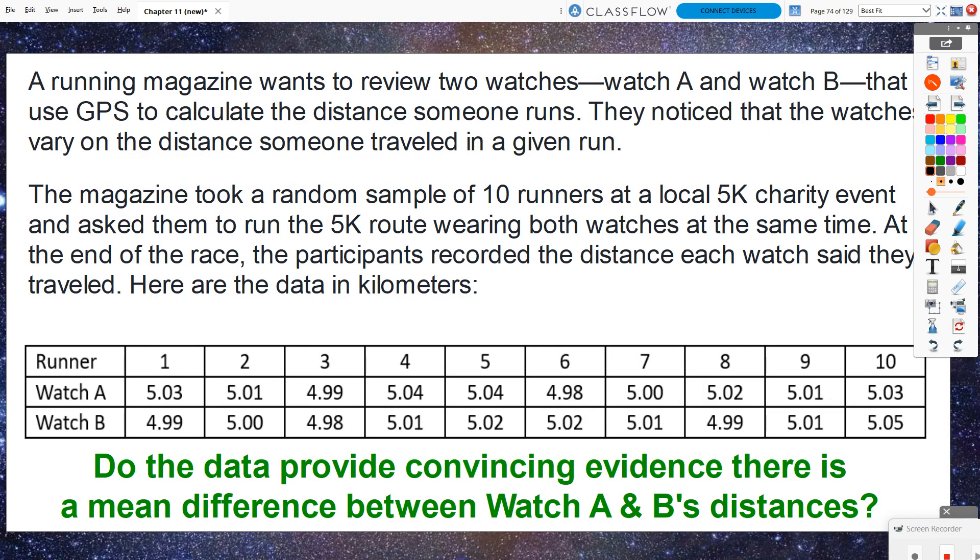We're going to revisit the same example that we did last chapter when we did this with a confidence interval. A running magazine wants to review two watches, watch A and watch B, that use GPS to calculate the distance someone runs. They noticed that the watches vary on the distance someone traveled in a given run.